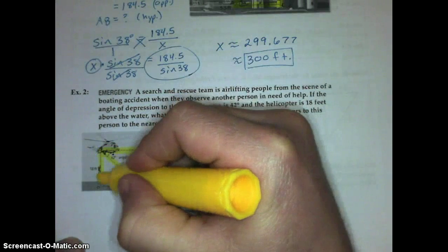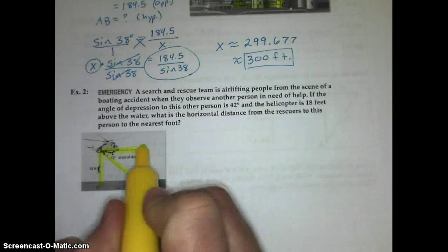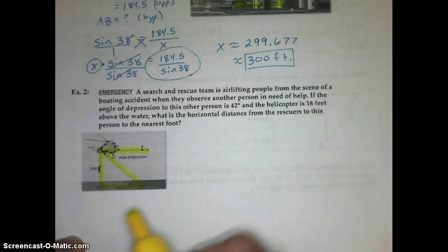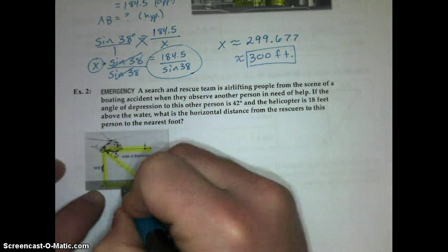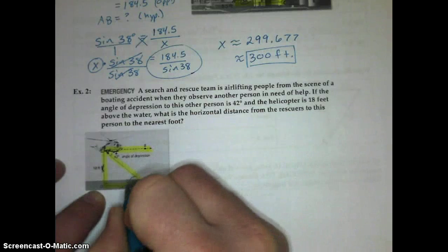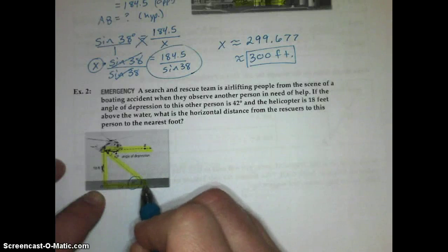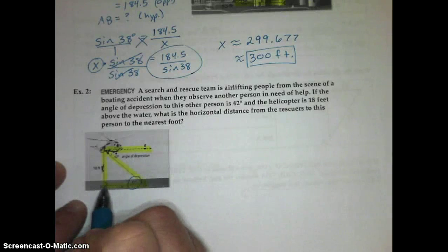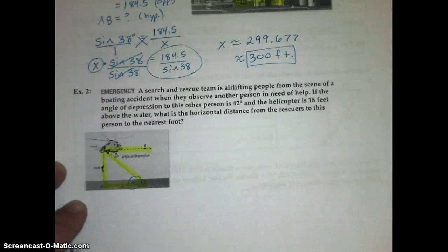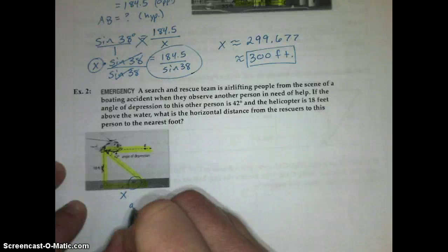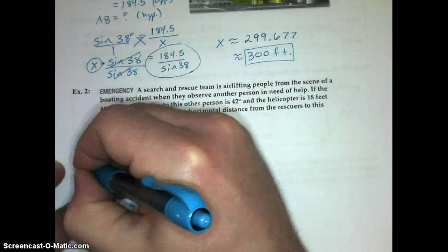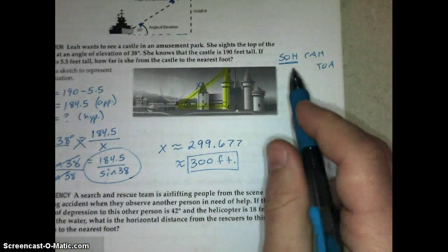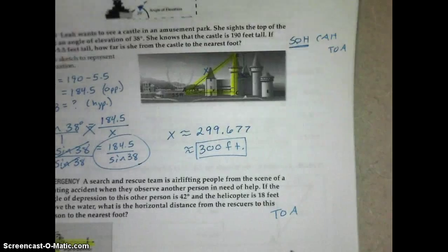We're using a 42 degree angle of depression formed by this horizontal and the line of sight to the other person. The helicopter is 18 feet above the water. This horizontal line of sight from the helicopter is parallel to the horizontal line at the sea level. So, we can just take this measurement and move it down to this measurement. These are parallel, so these alternate interior angles are congruent, so angle C is 42 degrees. This angle of depression is the same as this angle of elevation from the person's point of view. We're looking for the adjacent leg to this 42 degree angle, and we're using this 18 foot drop, which is the opposite leg. So if I'm using opposite and adjacent, we will be using tangent.